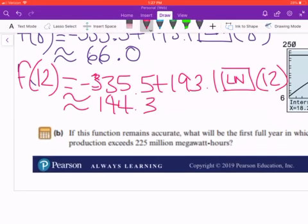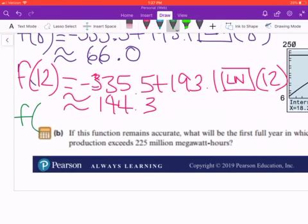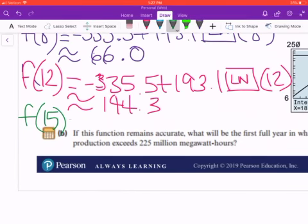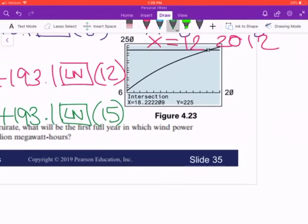Lastly, for the year 2015, x = 15. We substitute into the formula -335.5 + 193.1 ln(15), making sure to enter decimal points correctly. This gives us approximately 187.4, and remember the units are million megawatt-hours.